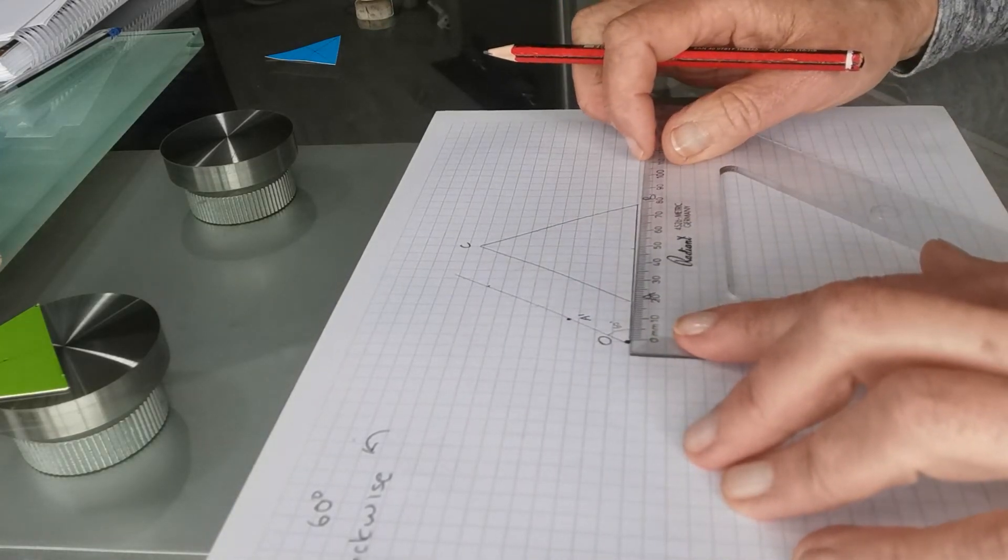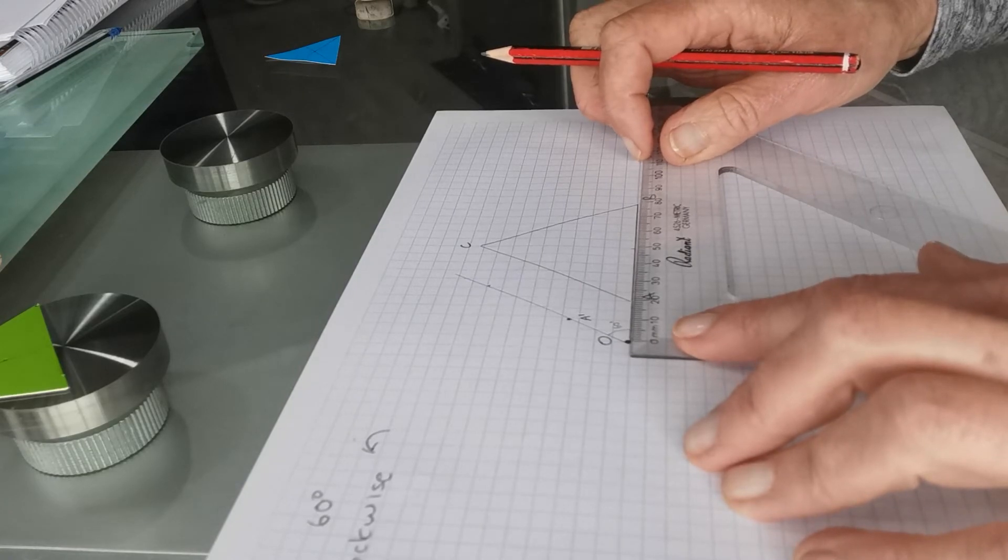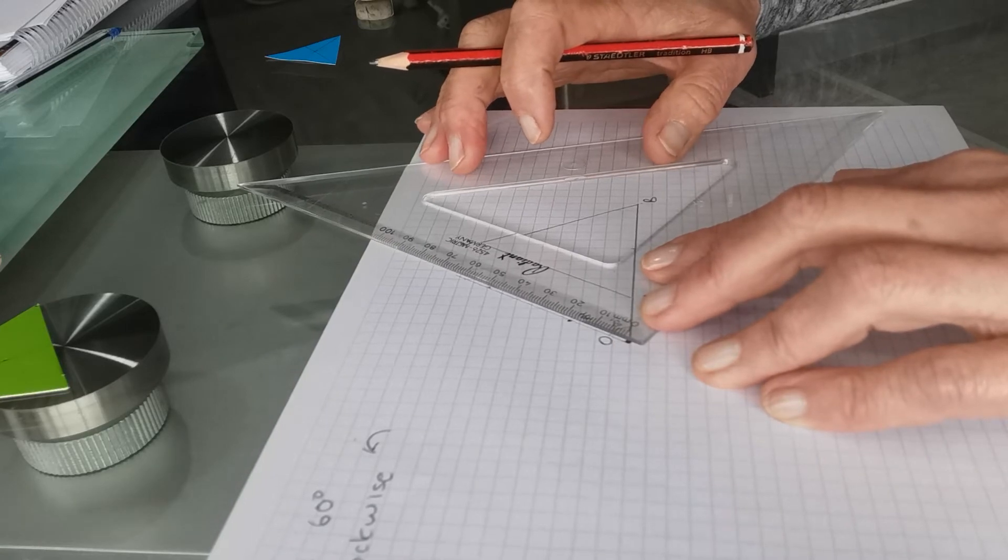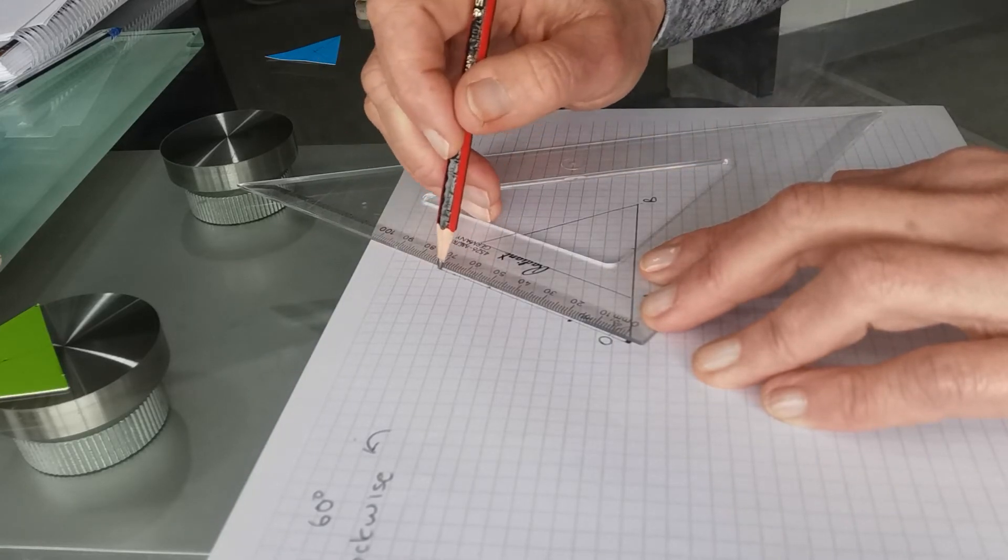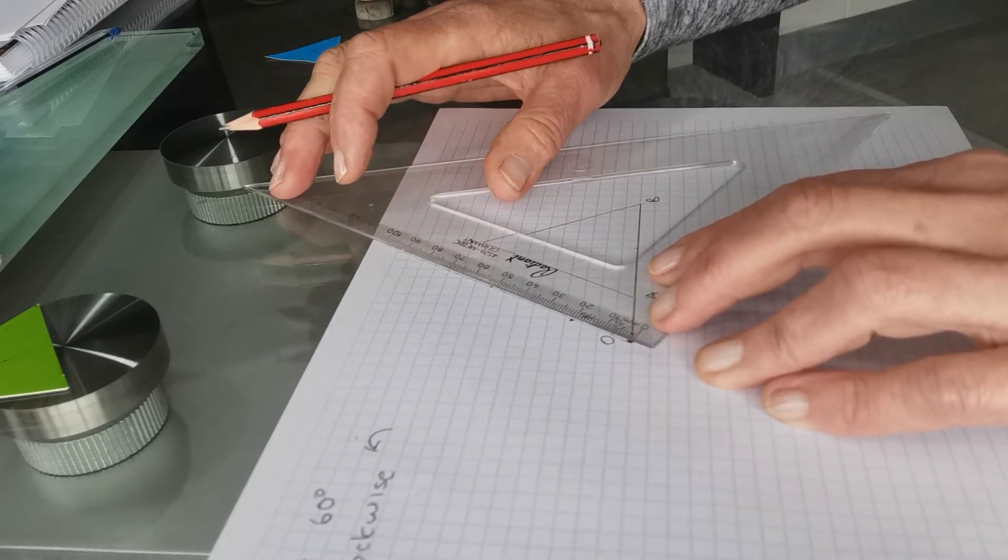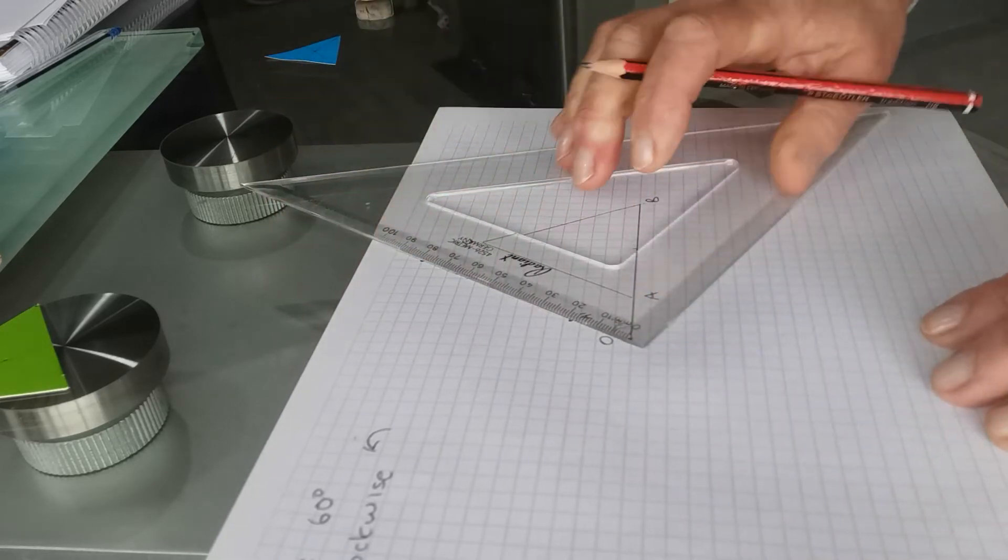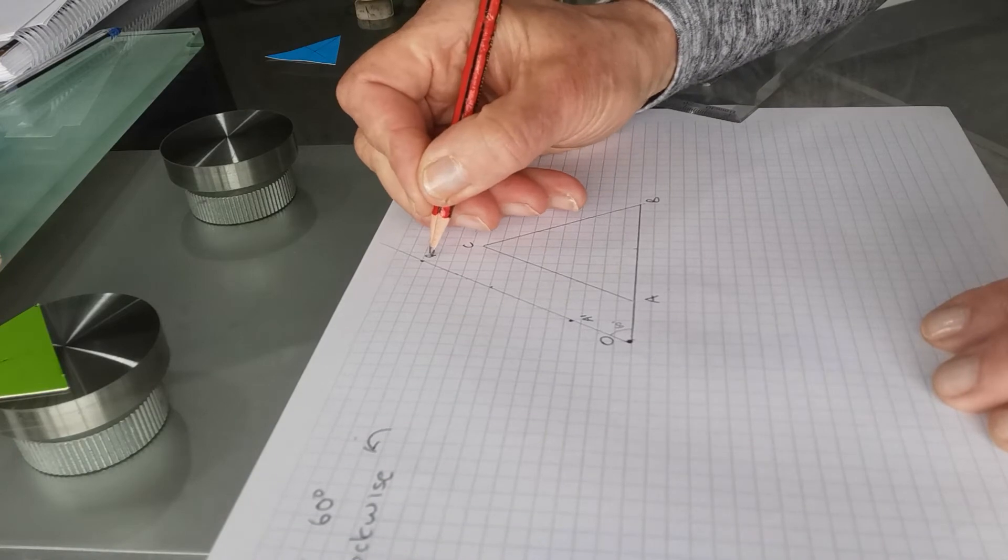So B is on that same line and it's 8 centimeters from the center. Maybe we need to extend this line a little and measure 8 centimeters along. There it is. So that is B prime.